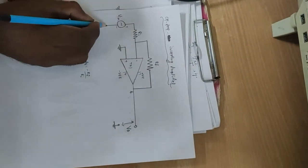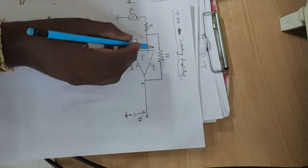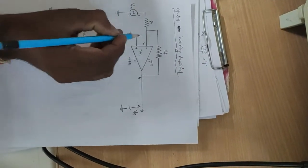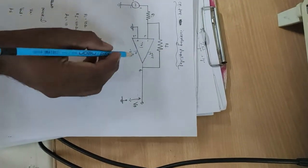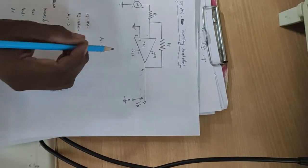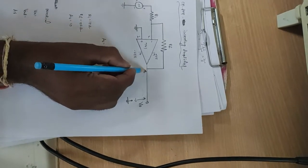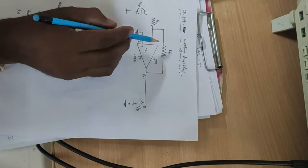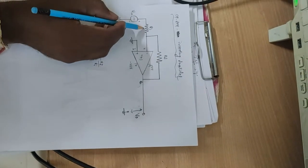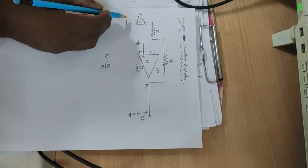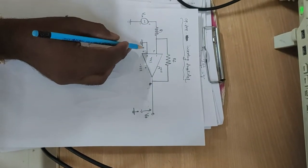This is the Inverting Terminal at Pin 2 and this is the Non-Inverting Terminal. The 7th Pin is the Plus Vsat and 4th Pin is Minus Vsat. The 6th Pin is Vout. This is the Feedback Resistance Rf and Input Resistance Ri. The Input Voltage Vin is given to the Inverting Terminal, and the Non-Inverting Terminal is connected to Ground.